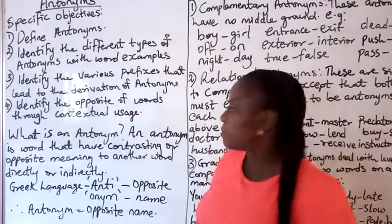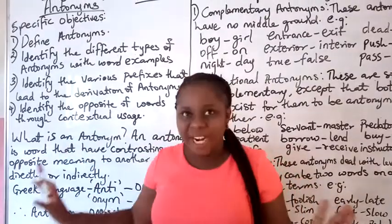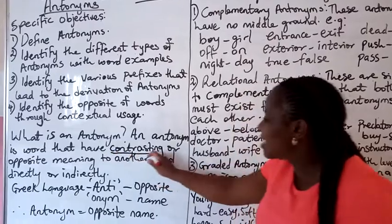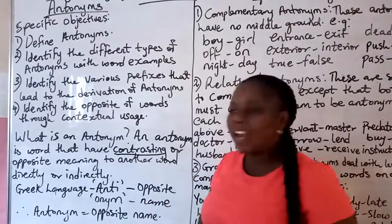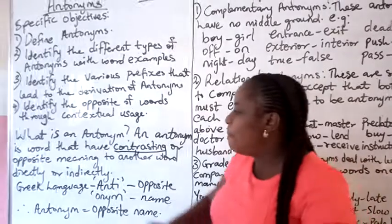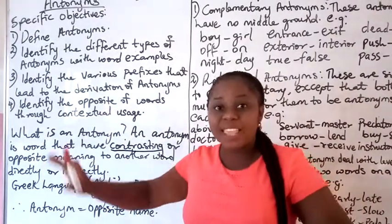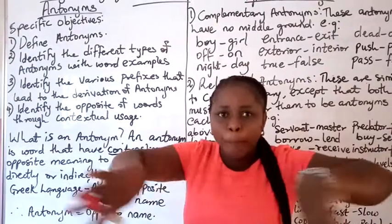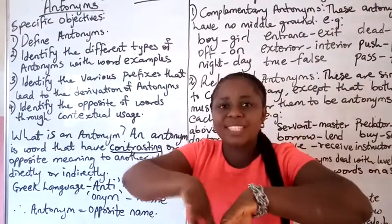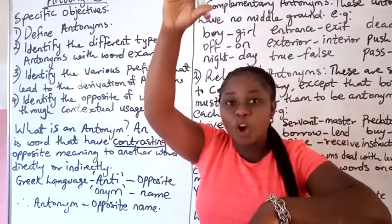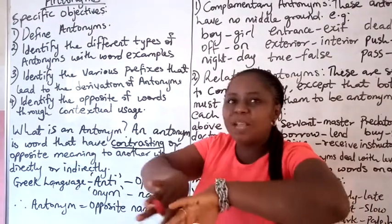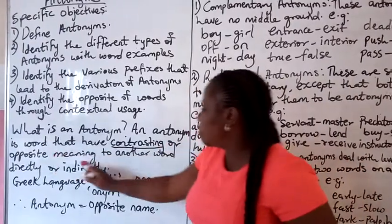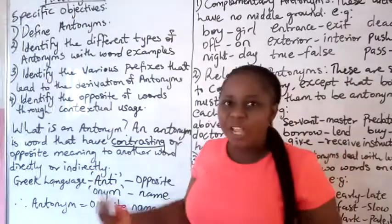What is an antonym? An antonym is a word that has contrasting or opposite meaning to another word. They don't mean the same thing — when you say one thing, another meaning comes from it. For example, the opposite of tall is short. So antonyms are words that have contrasting or opposite meaning to another word, directly or indirectly.